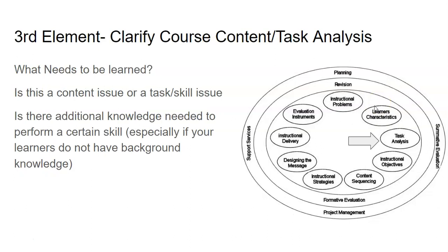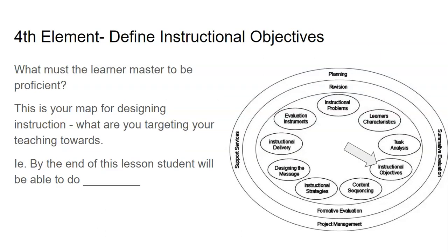The third element is course content and task analysis — essentially, what needs to be learned. Is this a content issue or a skill issue? Are we teaching content learners need to know, or a certain skill they cannot yet perform? And what additional background knowledge is needed to perform that skill, especially if learners don't already have it? What needs to be learned is the big question there.